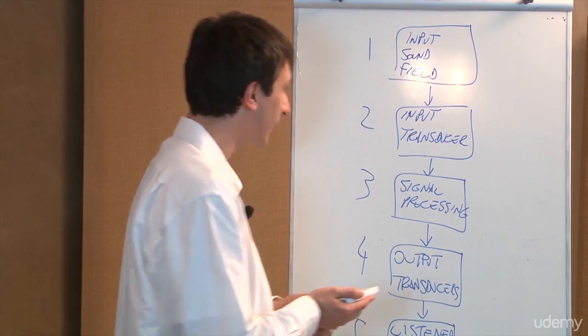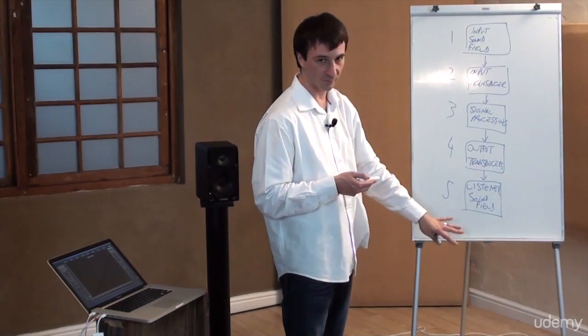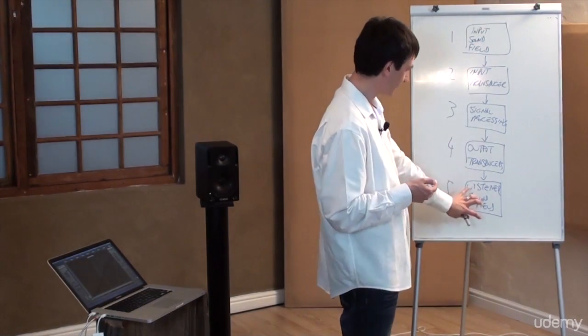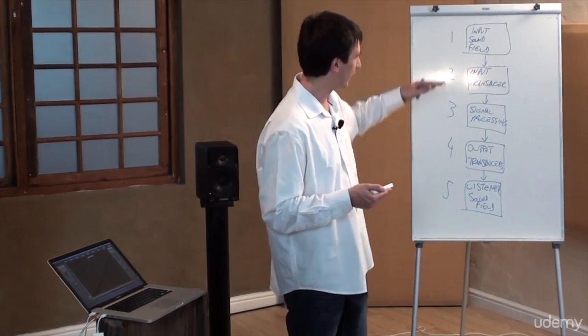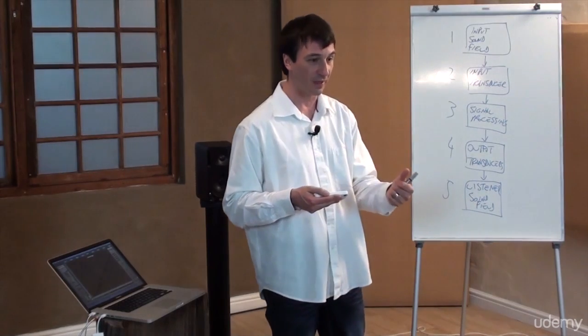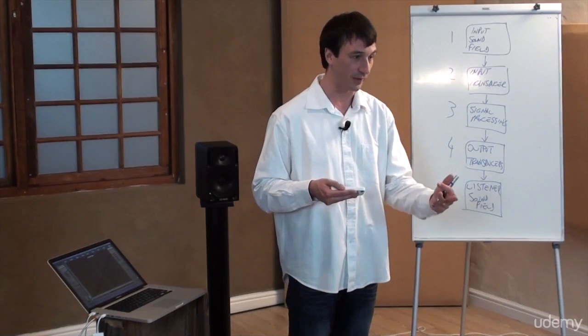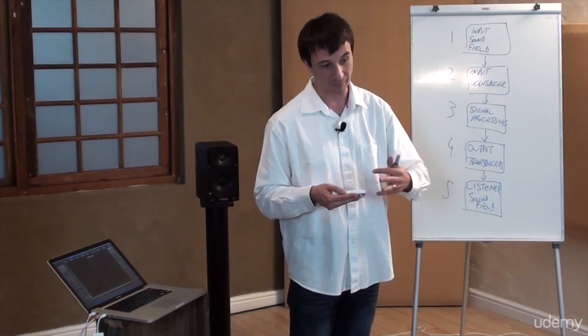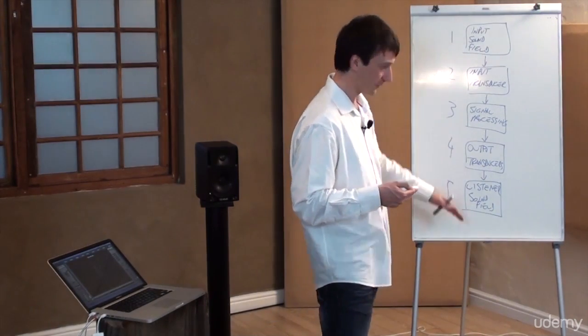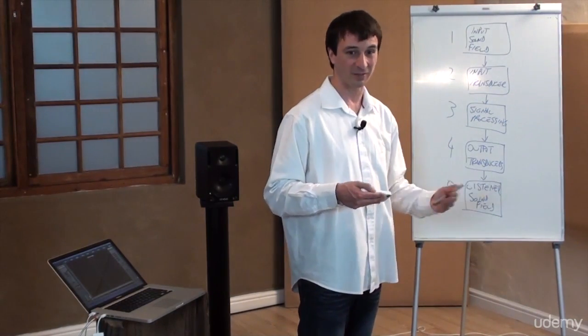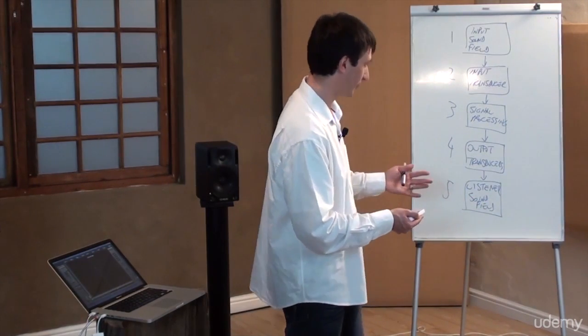Let's first name them, then explain them briefly, then draw some conclusions. The first one is called input sound field. The second one is input transducer. Then we have signal processing. Then we have output transducer. And the last one is listener sound field. Think of this as a chain of events. We go from the input sound field to the listener sound field. We conceive sound, we perceive sound. In between there is a journey. This is the journey of sound. If we understand this, whether you're doing live sound, recording, broadcast, live broadcast, shooting a movie, whatever you're doing within sound production, you're always going to have these five stages.